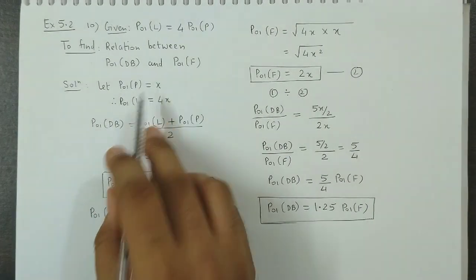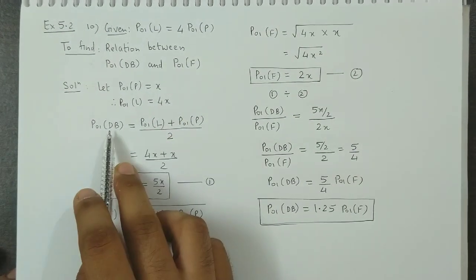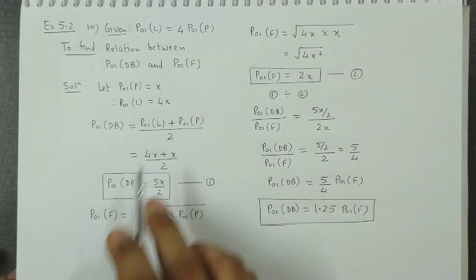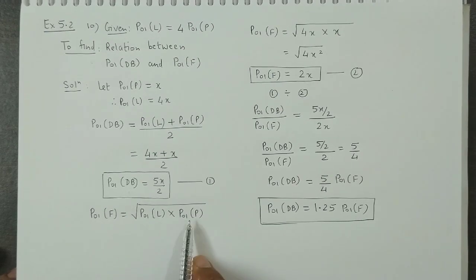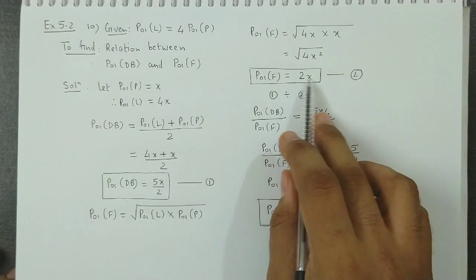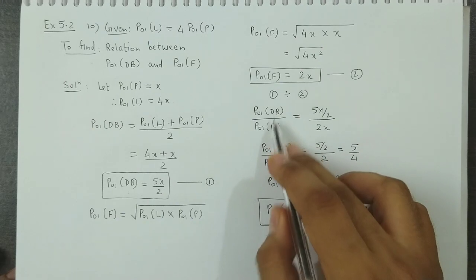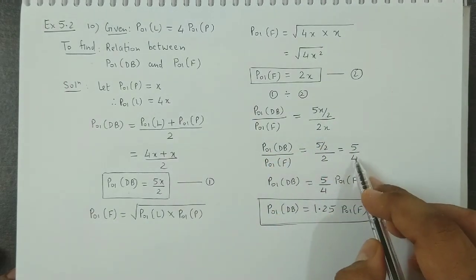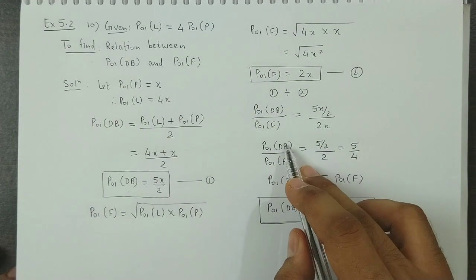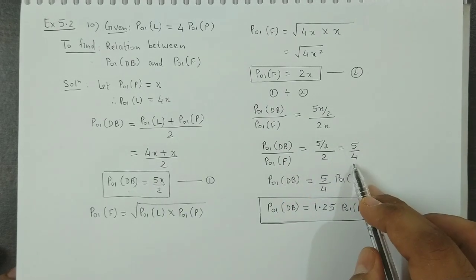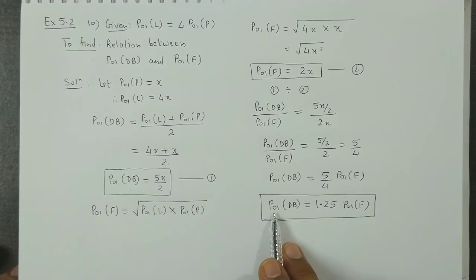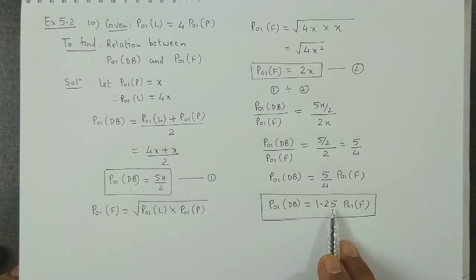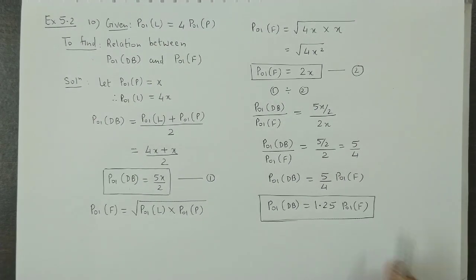To summarize: Paasche's index is x, so Laspeyres' index is 4x. Dorbisch-Bowley's index is (L + P)/2 = 5x/2. Fisher's index is the root of L times P = 2x. Dividing Dorbisch-Bowley by Fisher's index, x cancels and we get 5/4. Therefore, Dorbisch-Bowley's index is 5/4 times Fisher's index, which is 1.25 times Fisher's price index.